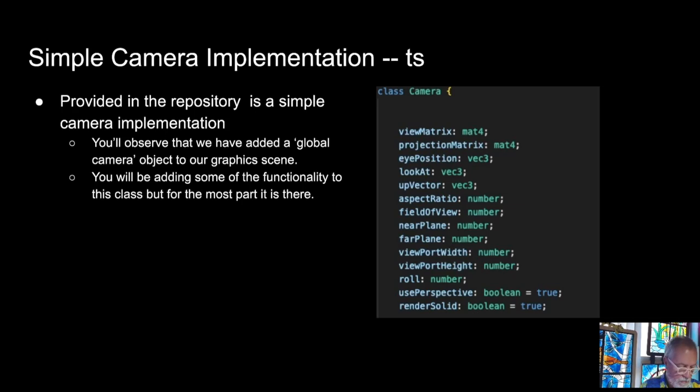So, in the framework that we're developing for the class, I have actually implemented a simple camera implementation. And for assignment four, you'll be working on this. You'll be adding some functionality to the camera class. But as you can see, we've stored the view matrix and the projection matrix. We have a position. We have a look-at vector. We have an up vector. All three of those are the three things that we're using for this camera. We have an aspect ratio, which is the ratio of the width versus the height. We have a field of view, which is how wide angle, and we'll see this in class, you can get like this perspective distortion.